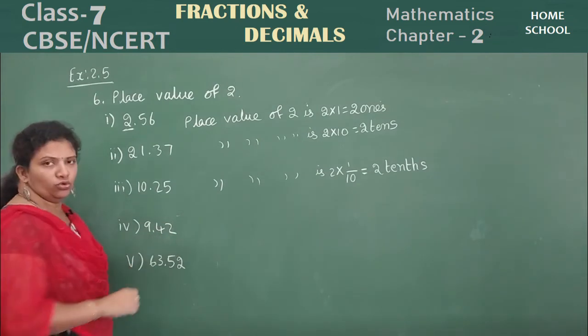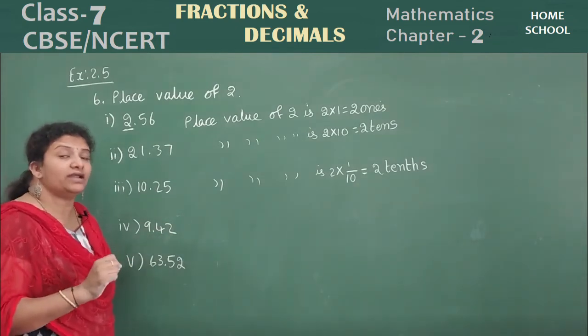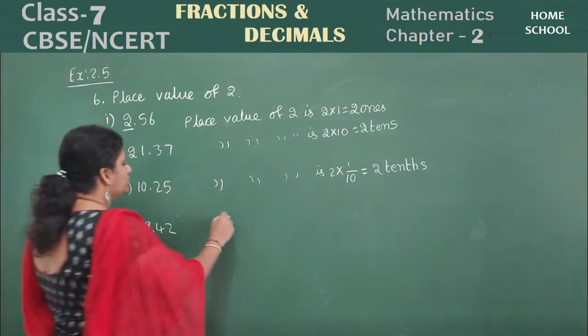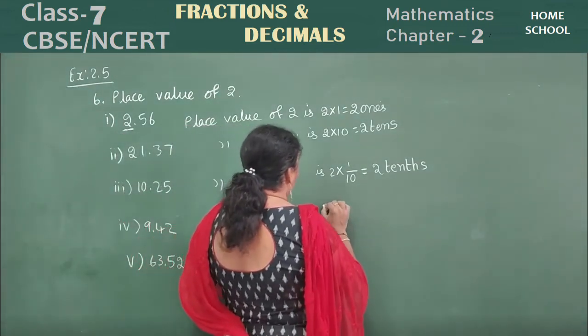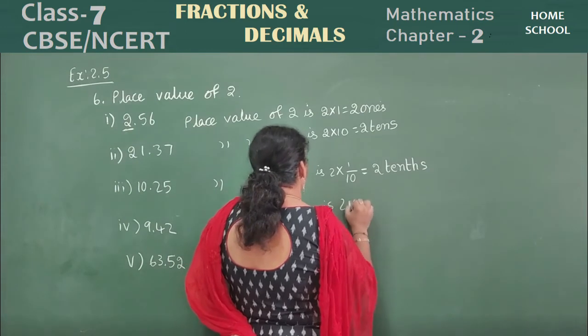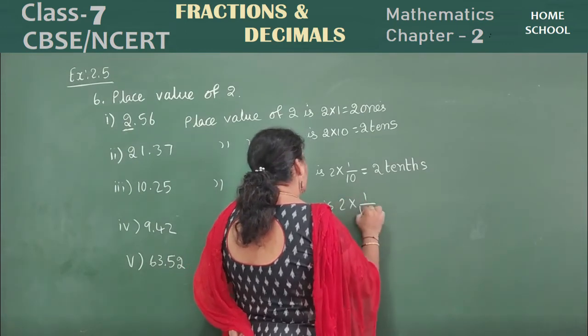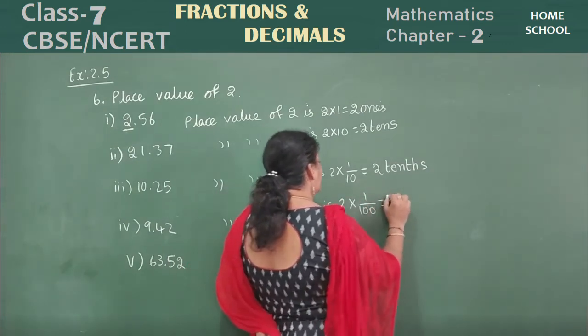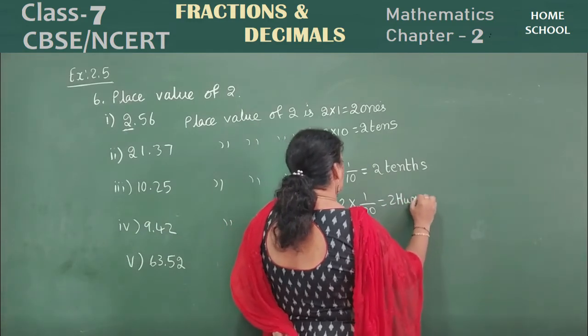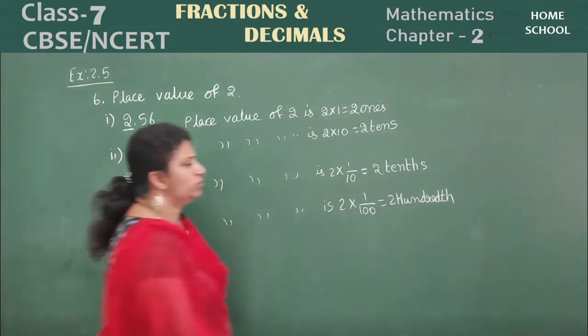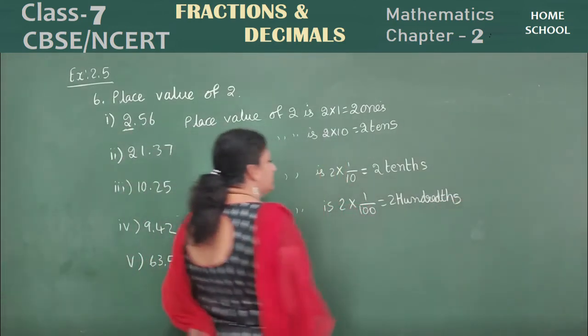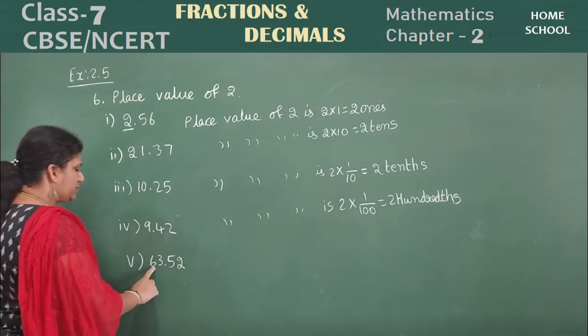2 is in hundredth place, right? So place value of 2 is 2 into 1 by 100. That is 2 hundredths. 2 hundredths place it is there. Okay? Next one.